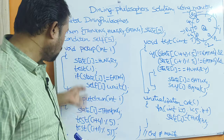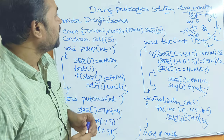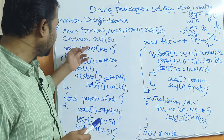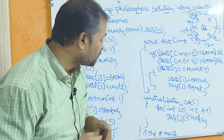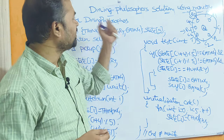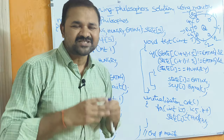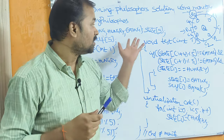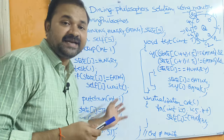Once the putdown is complete, this is the Dining Philosopher's solution using a monitor. We have the pickup procedure, the putdown procedure, the test procedure, and the initialization_code procedure. First we call the pickup function, then eat, and then call the putdown function. This is the monitor solution for the Dining Philosopher's problem.